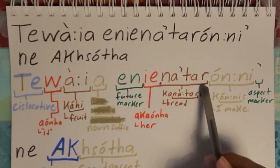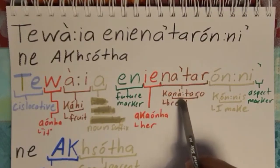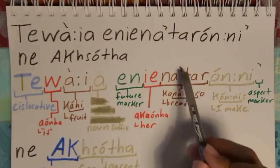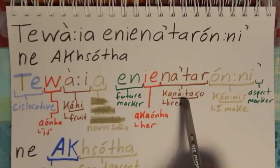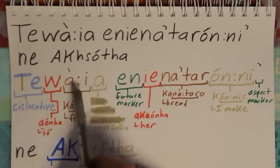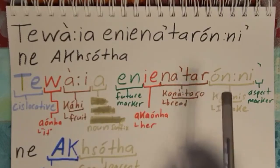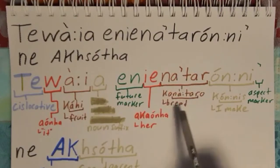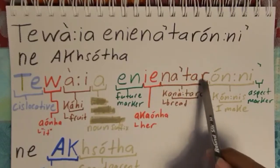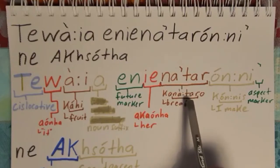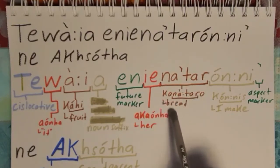This 'n-a glottal t-a-r' comes from the word 'kanadaro', and this is also a falling tone or a downstress. Over here, the downstress was compensating for the H; here, the downstress is compensating for a glottal. Downstresses sometimes can compensate for an H or a glottal. 'Kanadaro' means bread, and that 'n-a glottal t-a-r' is right here — N, downstress (so there'll be a glottal), T-A-R. This is the noun root meaning bread.